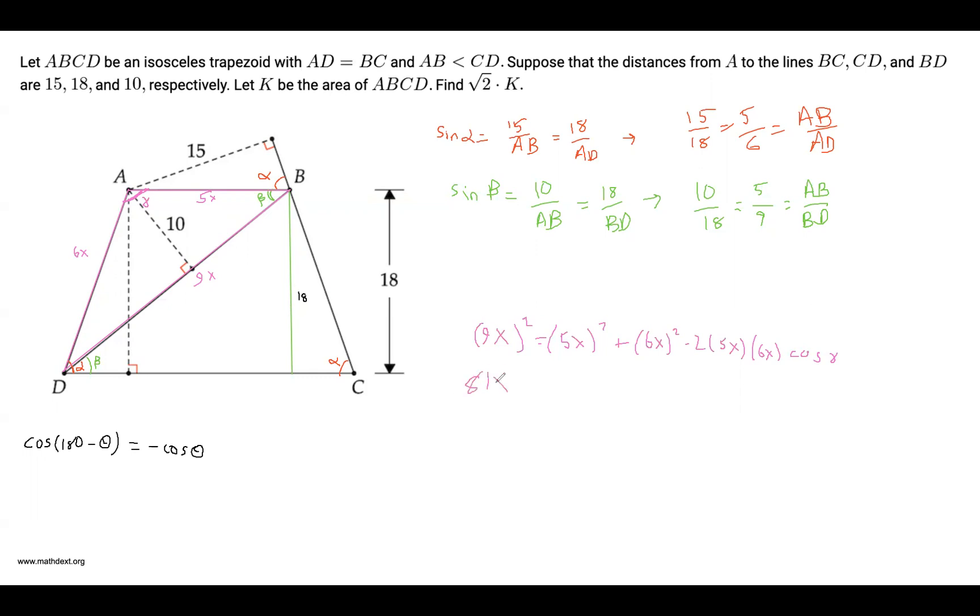We get 81x squared is 25x squared plus 36x squared minus 60x squared cosine gamma. Rearranging gives 60x squared cosine gamma is negative 20x squared. And cosine of gamma is negative 1 over 3.